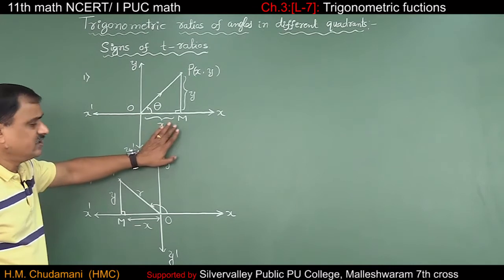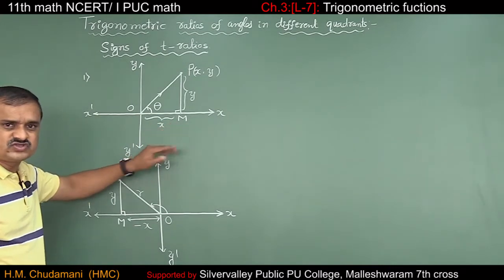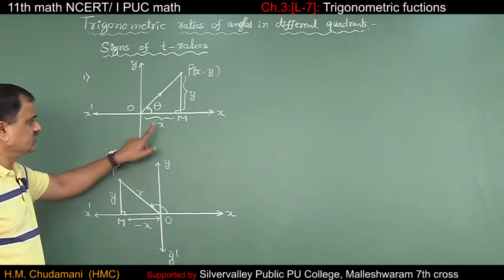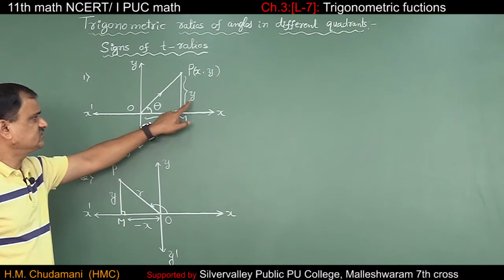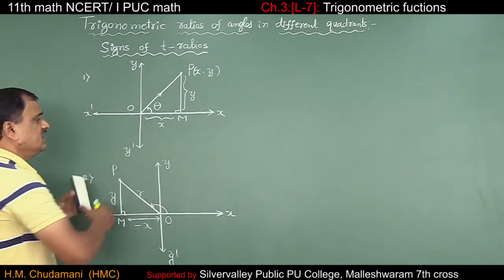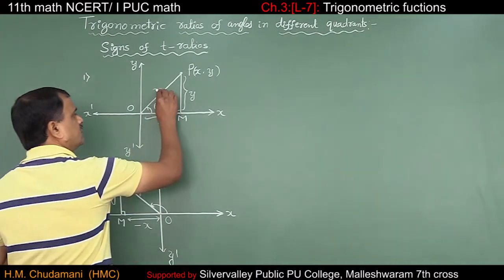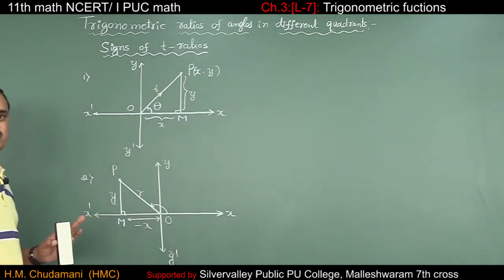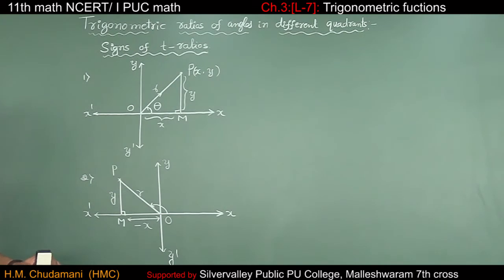In the first quadrant, all trigonometric functions are positive because x, y, and r are all positive — r is always positive.